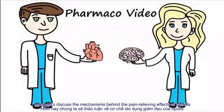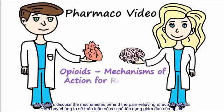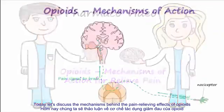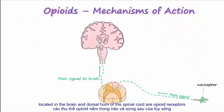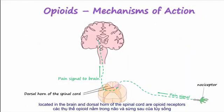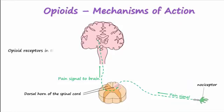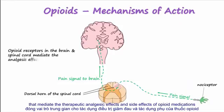Today, let's discuss the mechanisms behind the pain-relieving effects of opioids. Located in the brain and dorsal horn of the spinal cord are opioid receptors that mediate the therapeutic analgesic effects and side effects of opioid medications.